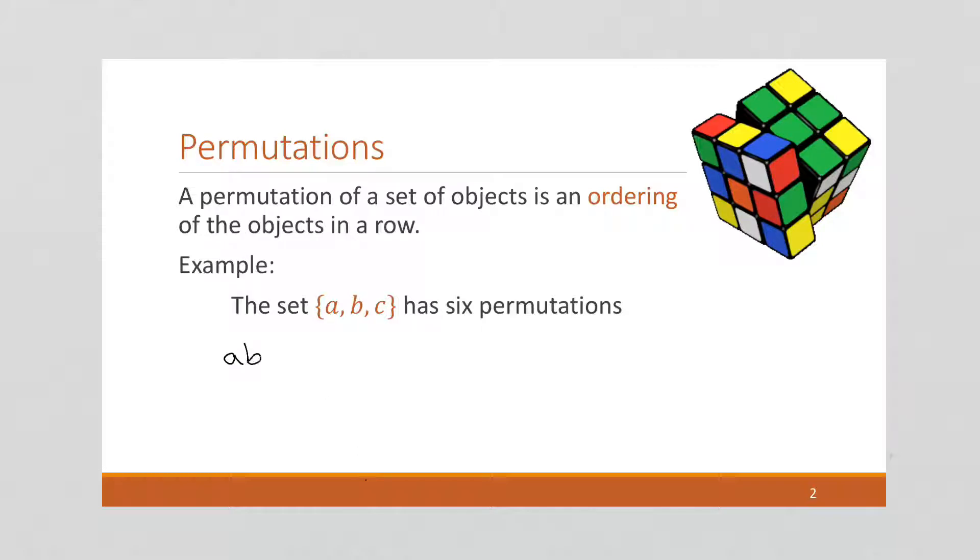You can say A, B, C; A, C, B; B, A, C; B, C, A; C, A, B; and C, B, A. So what I did is I picked A as the first letter, and then there's only two choices for the other two, and I did that for all three letters.